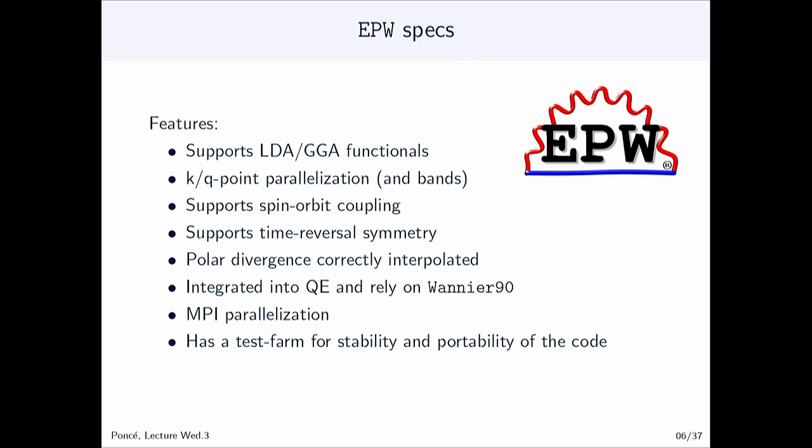Some features of EPW: it supports only two functionals — LDA and GGA. You can use K-point and Q-point parallelization, and to some extent band parallelization, but the recommended procedure is to parallelize on K-points and Q-points. It supports spin-orbit coupling and time-reversal symmetry, correctly interpolates the polar divergence, is integrated into Quantum ESPRESSO, relies on Wannier90, is parallelized using MPI, has a test farm for stability, and has documentation.